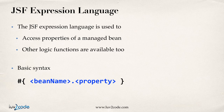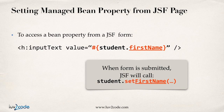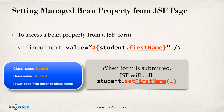The JSF expression language is used to access properties of a Managed Bean. The basic syntax is you give a pound sign with a curly brace, and you give the bean name dot the property name. This allows you to access that property either to read the data or to set the data. Here's an example of setting a Managed Bean property from a JSF page: you use the input text component and say value equals student.firstName. When you submit the form, JSF will call student.setFirstName automatically.